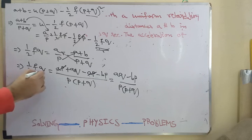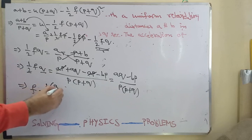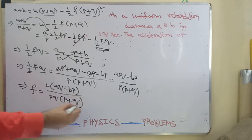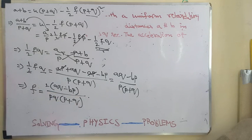Now what is left is A Q minus B P divided by P into P plus Q. We will transport this Q by 2 onto the other side. So we get F is equal to 2 times A Q minus B P divided by P Q into P plus Q. Hence the answer, that is option A.